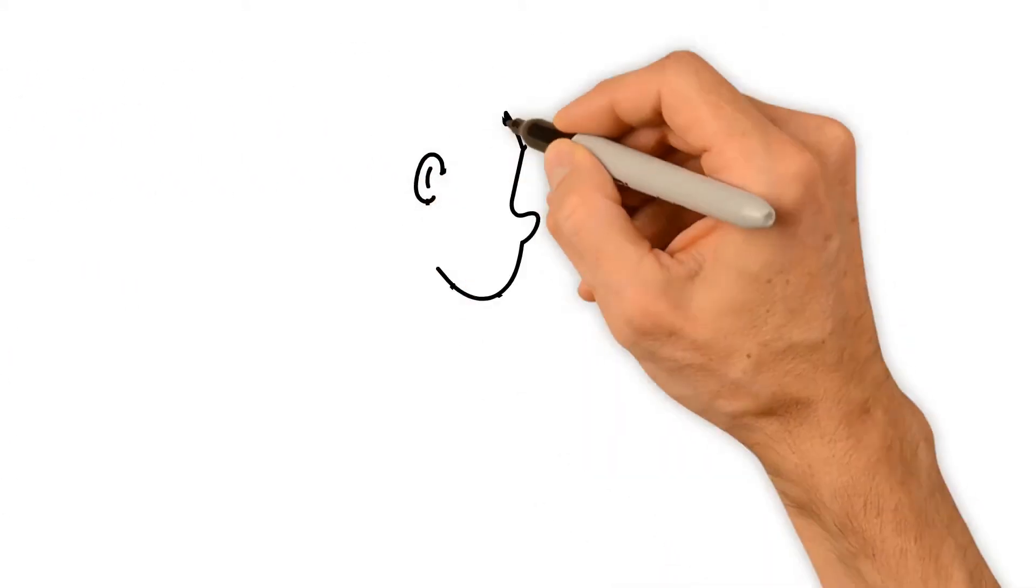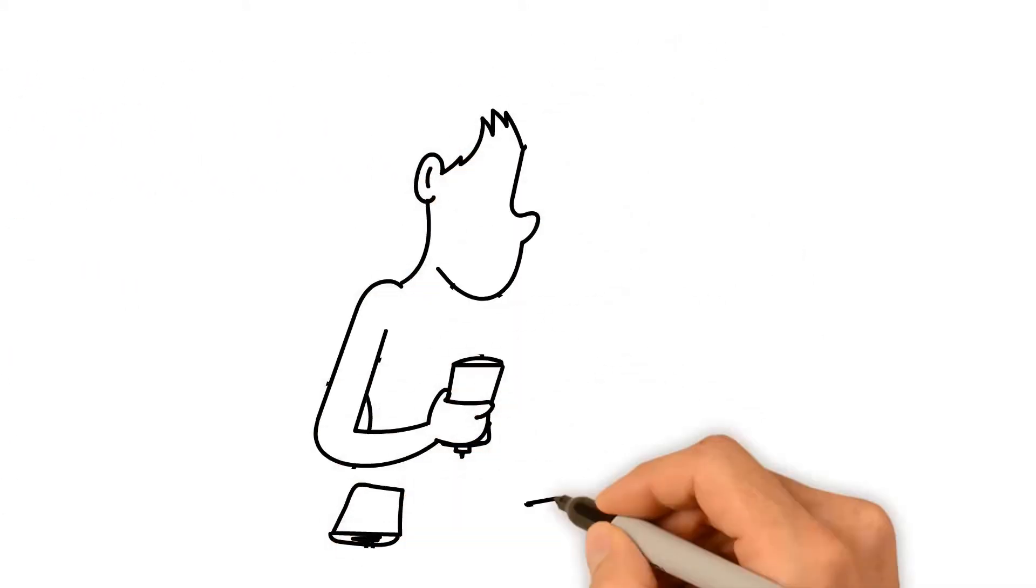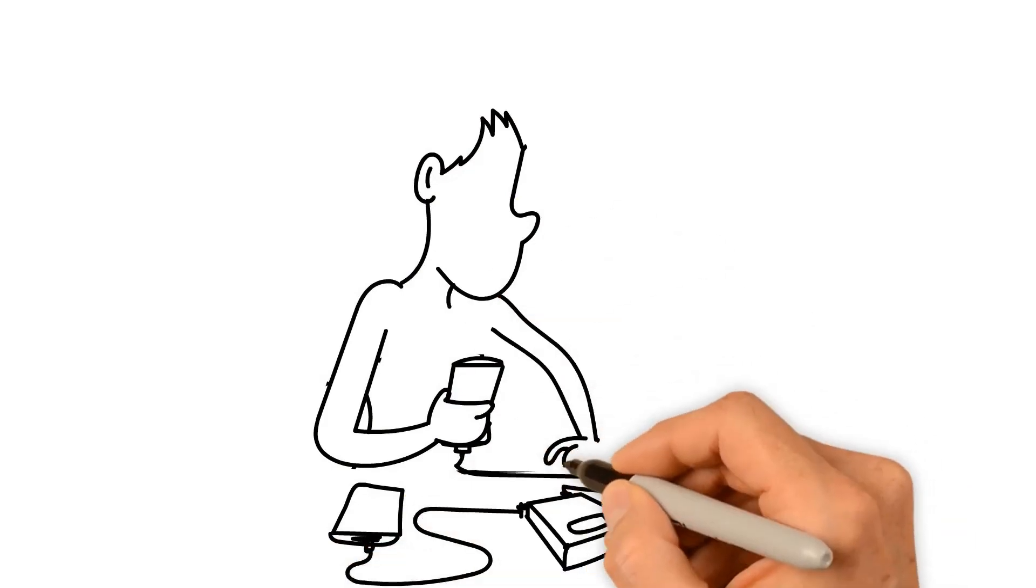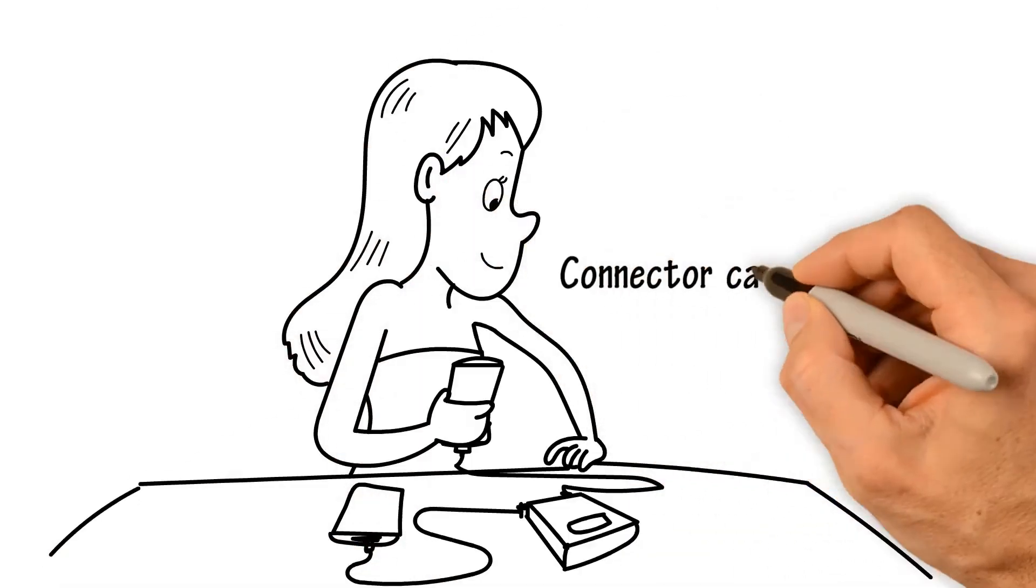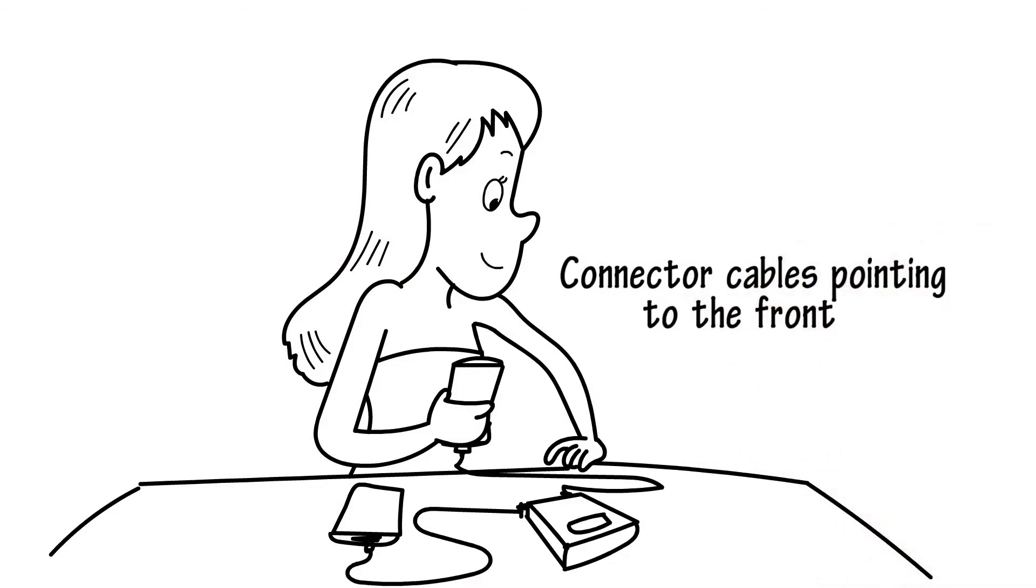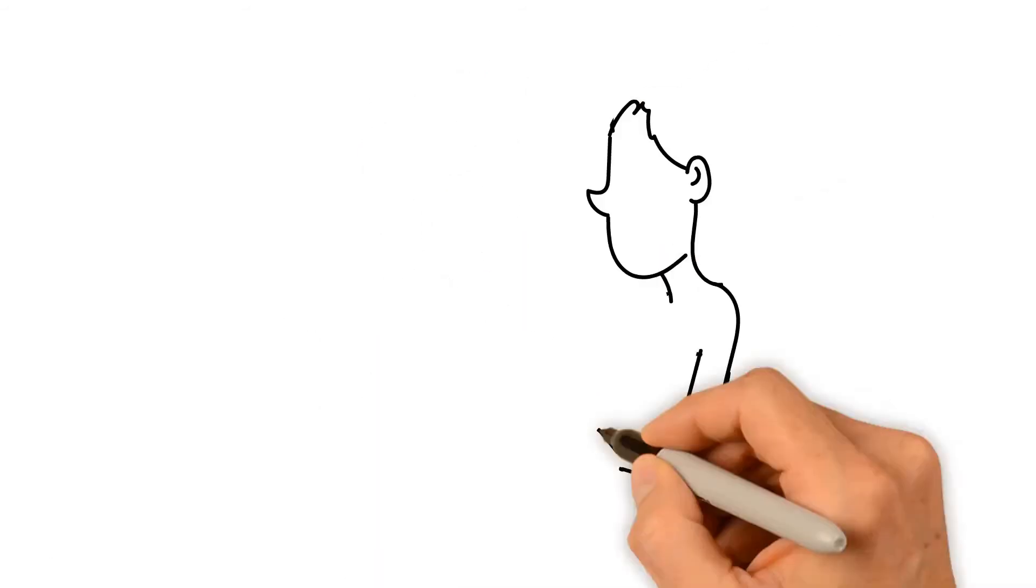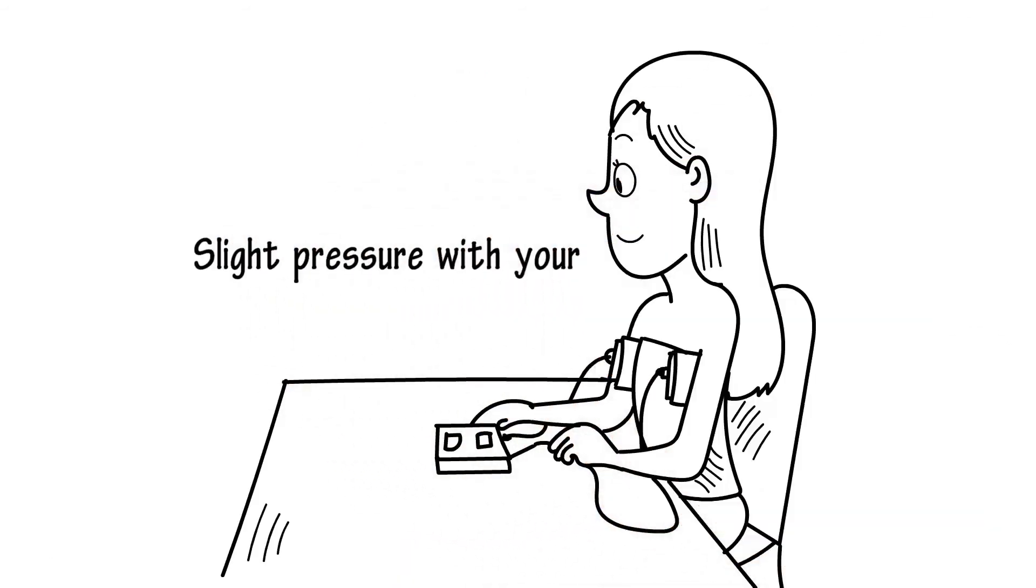You're now ready to begin treatment. Insert an attachment, sponge pad sleeve plus electrode, under each arm with the connector cables pointing to the front. Keep them in place by applying slight pressure with your arms.